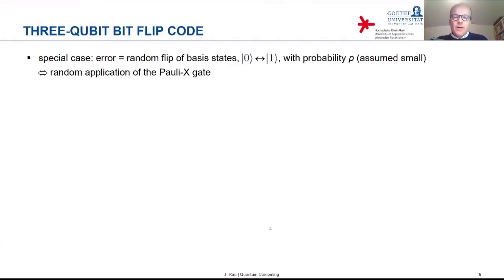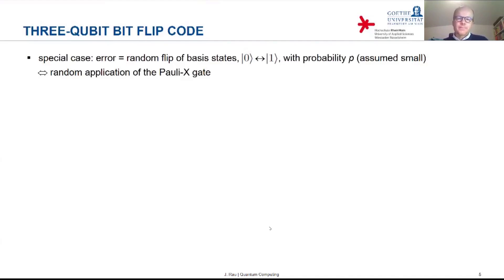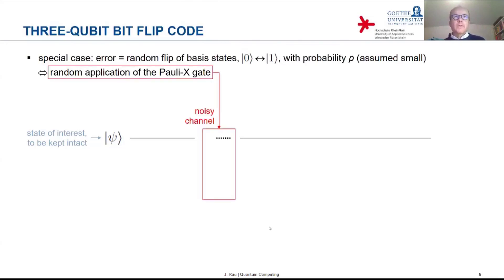This type of error amounts to a random application of the Pauli X gate, which flips the basis states. You can imagine the noise as a random application of the Pauli X gate with some small probability p. The situation we are considering is the following: we have a qubit of interest in an arbitrary superposition state |ψ⟩ — it doesn't have to be a basis state — and we transmit that qubit through a noisy channel and want to keep that state intact despite the noise.